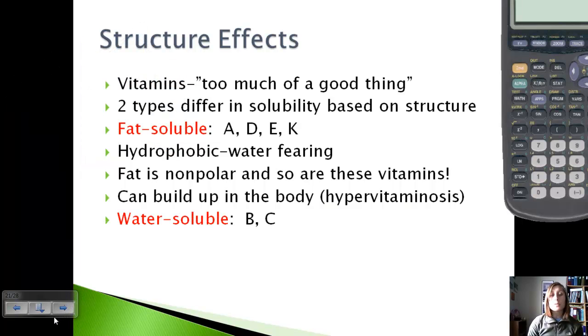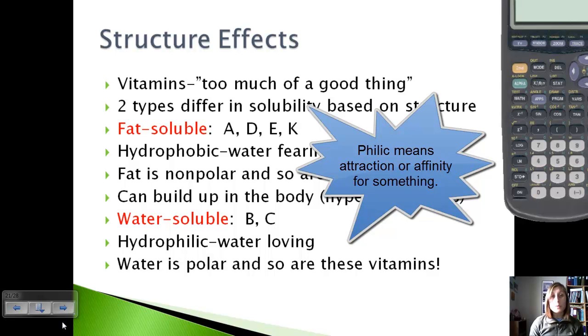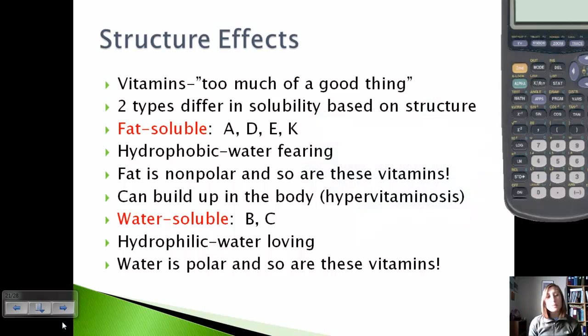The other type is water-soluble, mainly vitamin B and C. These are what are called hydrophilic, which means that they're water-loving. And so because they like water, they must have similar properties to water. Well, water is polar, and so are these vitamins. These vitamins you can take pretty much as much as you want, and they will just be flushed out of your body because they are similar in structure to water. So they'll dissolve in water and not dissolve in fat.